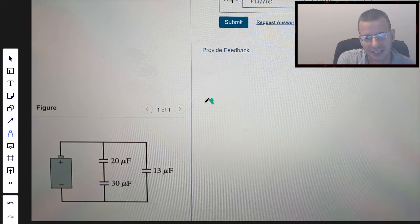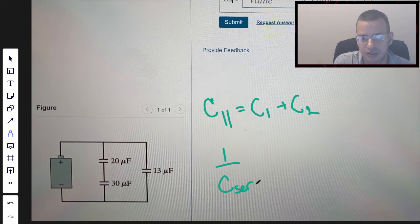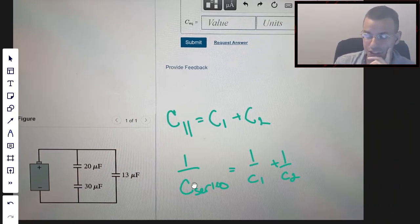A capacitance in parallel equals capacitance 1 plus capacitance 2, and the equivalent capacitance in series is 1 over C1 plus 1 over C2. So it's kind of like the opposite idea for resistors.